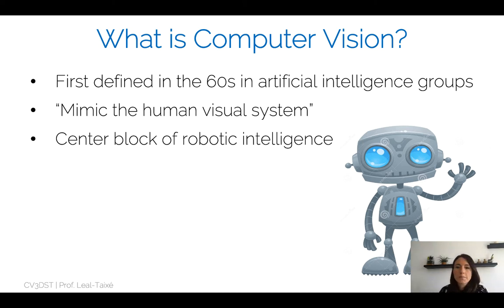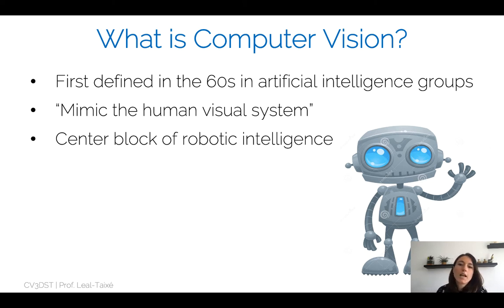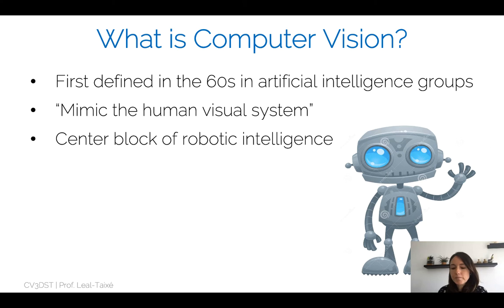So what is computer vision? It turns out computer vision was a problem first defined in the 1960s. The whole idea was to tackle the problem of mimicking the human visual system. This seemed quite an easy task for the artificial intelligence group back in the 60s, and they were supposing that this human visual system was supposed to be the central block of robotic intelligence.